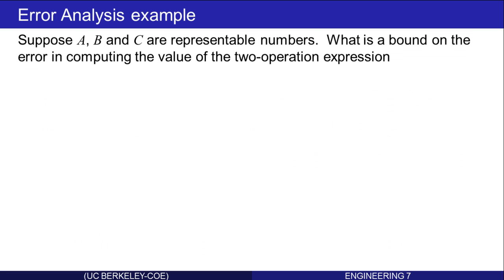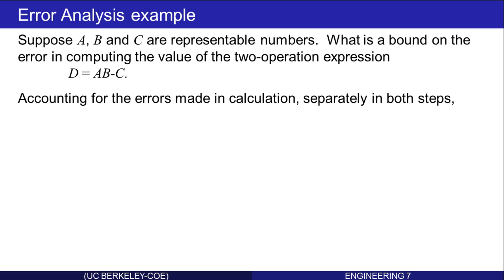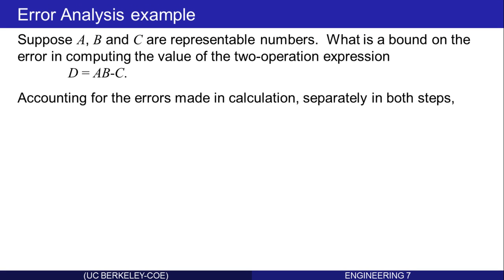Let's do an error analysis example using these ideas. Suppose a, b, and c are representable numbers. Let's get a bound on the error in computing the value of the two-operation expression a*b minus c. Remember, if it's a one-operation expression, we already know what the answer is. Let's account for errors made in the calculations. First there's a multiply, a times b, that creates an error. And then there's a subtraction of c, that creates an error. Let's go through that in two steps. The first operation is that a gets multiplied by b — let's call that result t. The value of t is the exact value of a times b, with a small relative error.